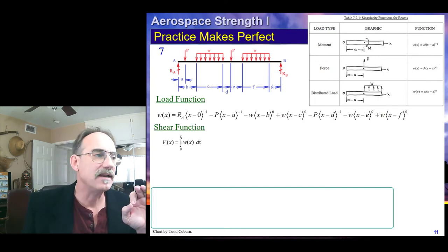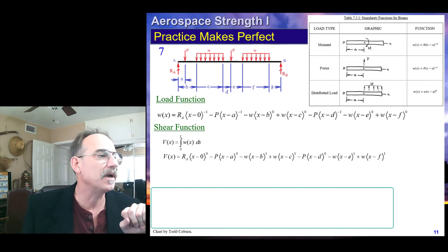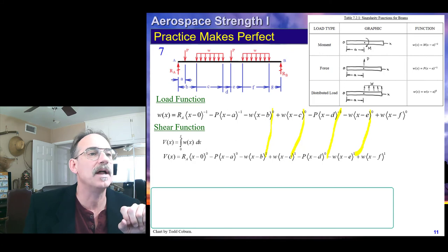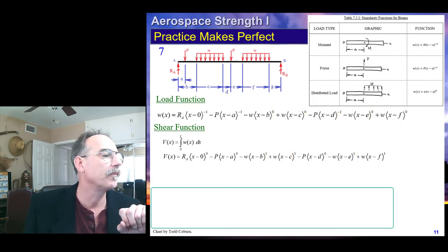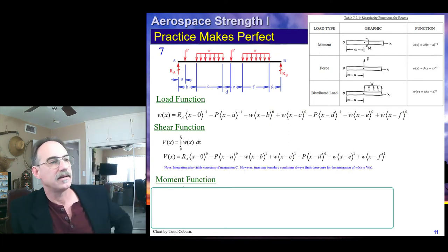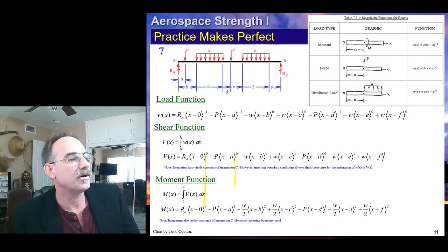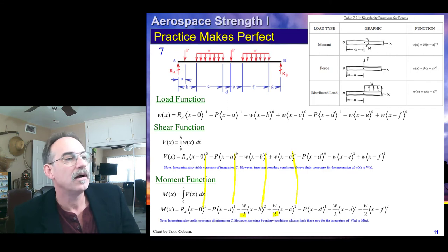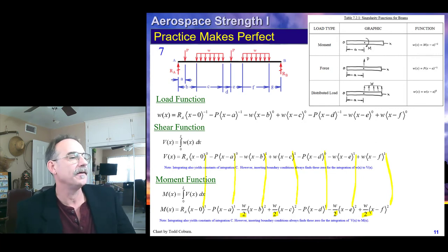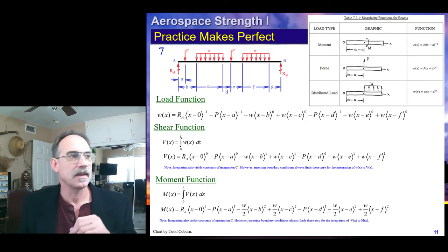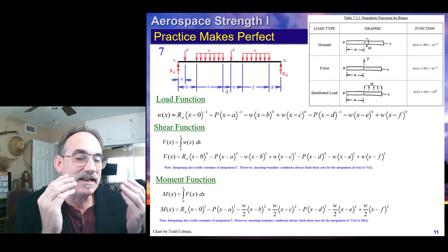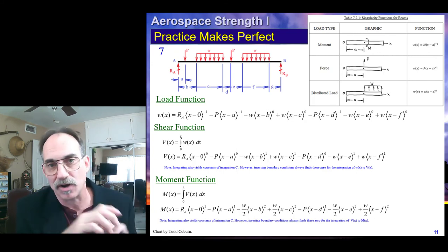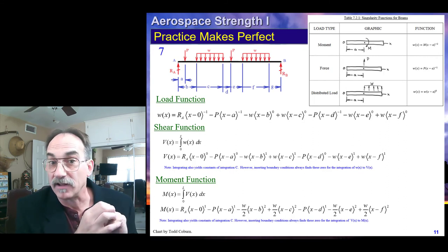We can now integrate that loading function to get shear — a really simple integration. Each −1 exponent goes to 0, and each 0 exponent goes to 1. Integrating again for moment: 0 goes to 1, and 1 goes to 2 with a factor of 1/2 in the denominator. Before, we had seven shear functions and seven moment functions — a nightmare for slopes and deflections. With singularity functions, it becomes quite easy.